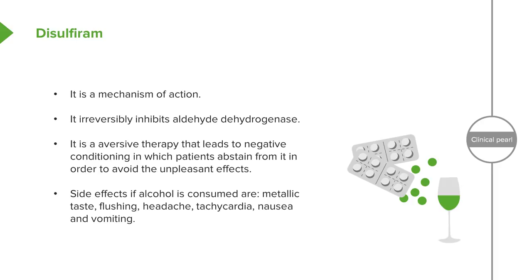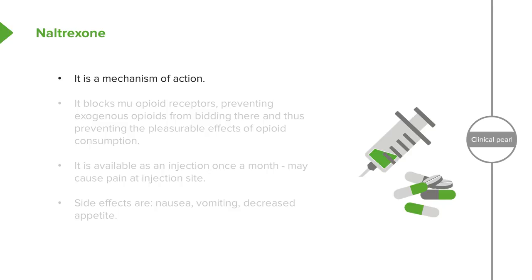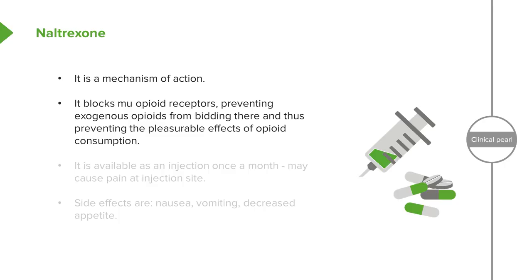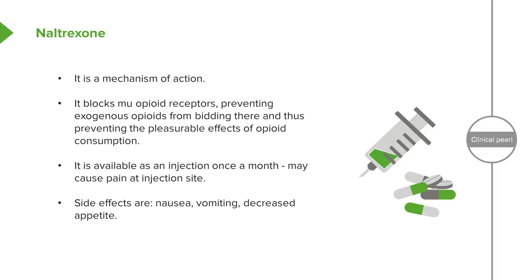More detail on naltrexone: it blocks opioid receptors, in particular the mu opioid receptors, which prevents exogenous opioids from binding there and thereby prevents the pleasurable effect of opioid or alcohol consumption. It's available not only as a pill but can also be administered as a monthly injection, which is a very nice option for some patients. Side effects include nausea, vomiting, and decreased appetite. The injectable form can sometimes cause a local reaction at the injection site and some pain.